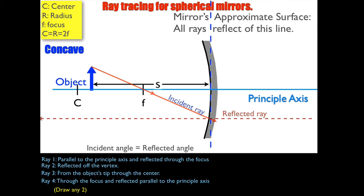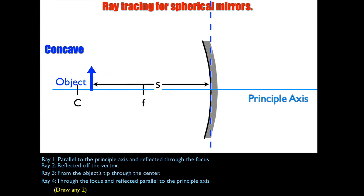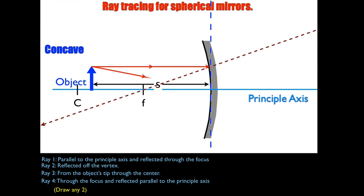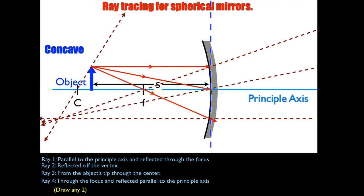So there you have it — the four rays you need to draw. When they're all drawn together, you can see ray one, ray two, ray three, and ray four. Notice where they cross — they cross on the left-hand side. Since all these rays came from the tip of the object, that's where I draw the tip of the image. The base of the image is on the principal axis. The image is upside down and outside the center.